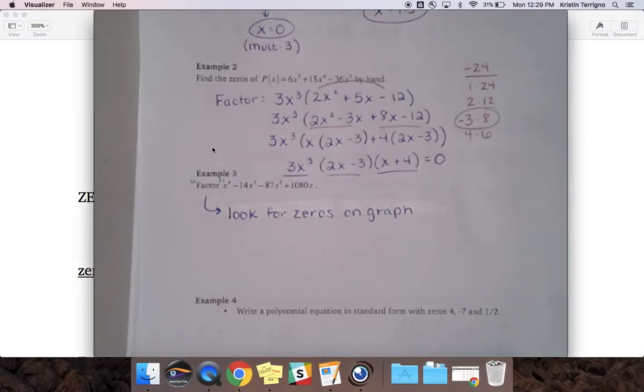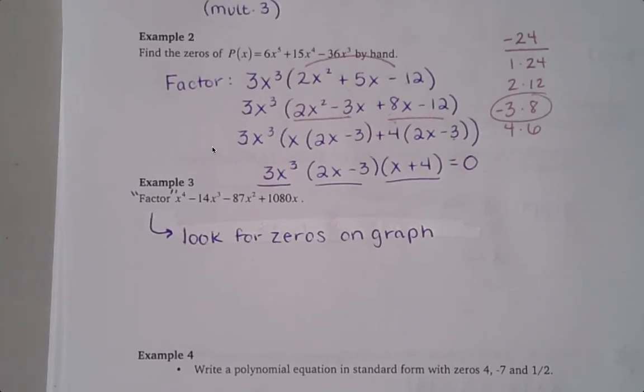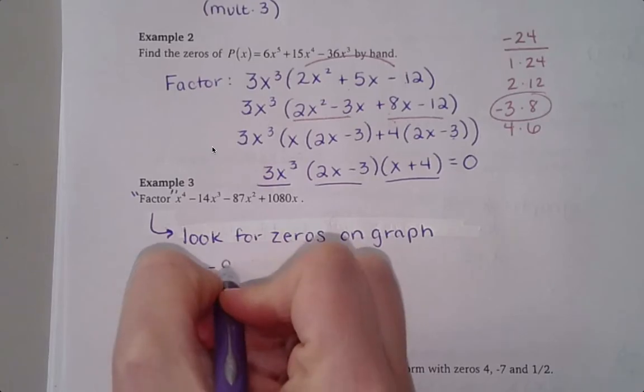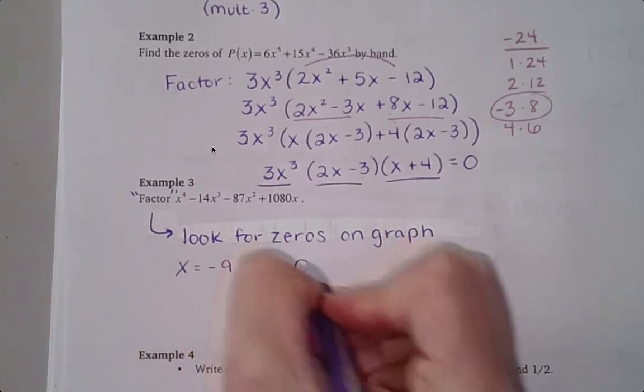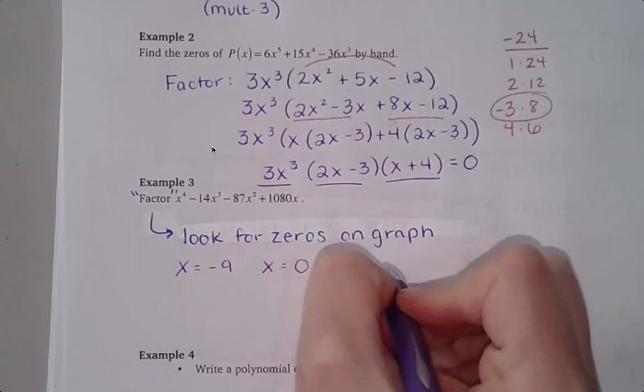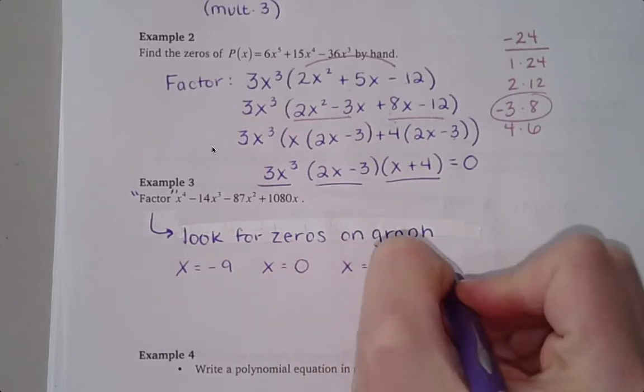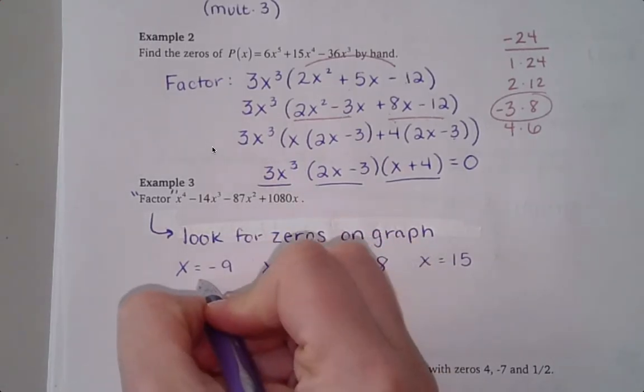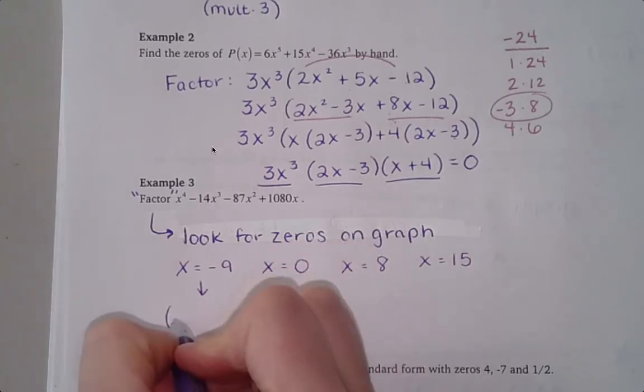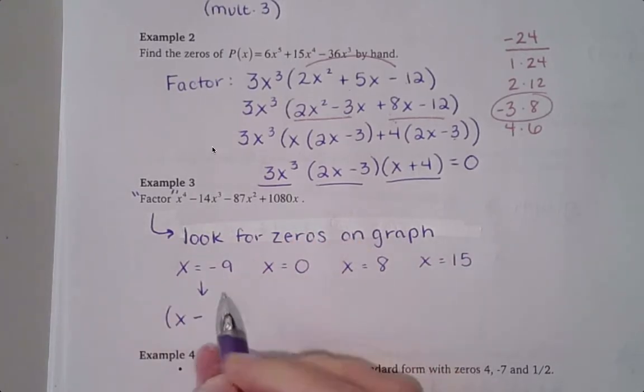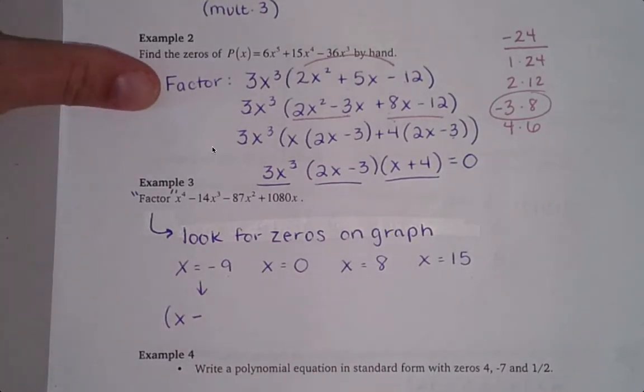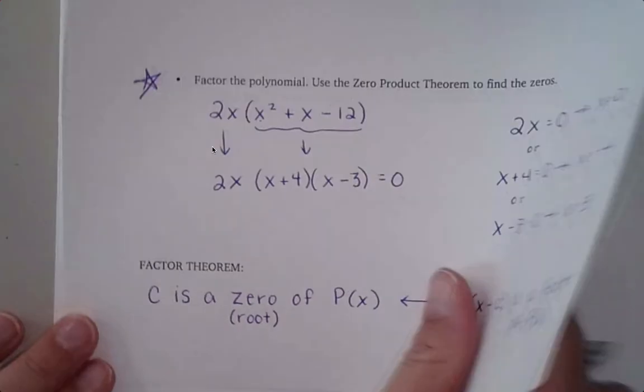So now that I know where my zeros are located, let's go back here. Here, I know I have a 0 at negative 9, I have a 0 at 0, I have a 0 at 8, and a 0 at 15. Well, what I can do now is I can say to each one of these, now I can turn you into a factor by doing x minus the 0. If you look at the wording of the factor theorem, actually let's look at that real quick, back here.